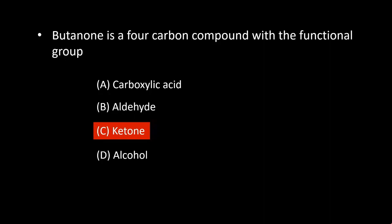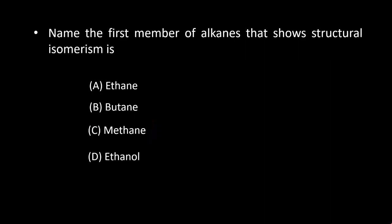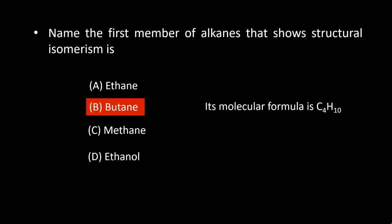Next question: name the first member of alkanes that shows structural isomerism. Option B, butane, is the right answer, and its molecular formula is C4H10.